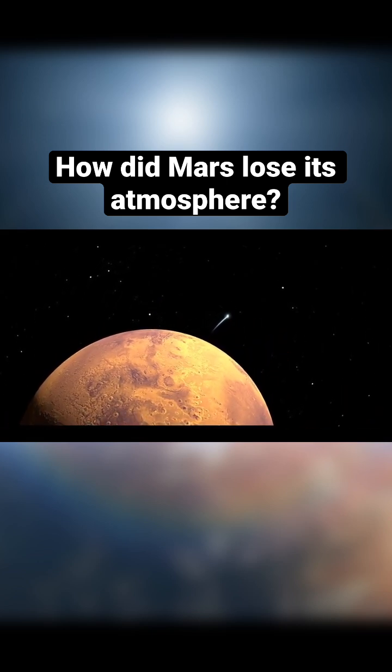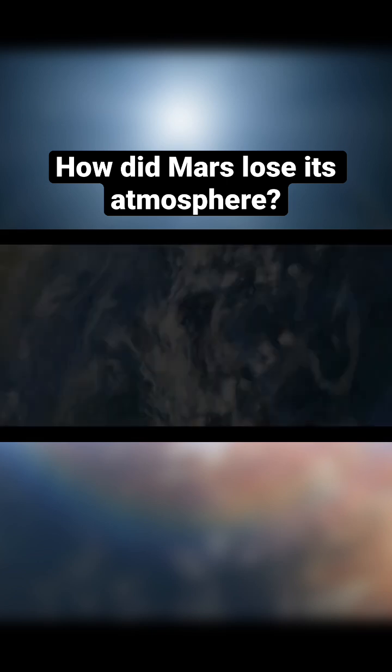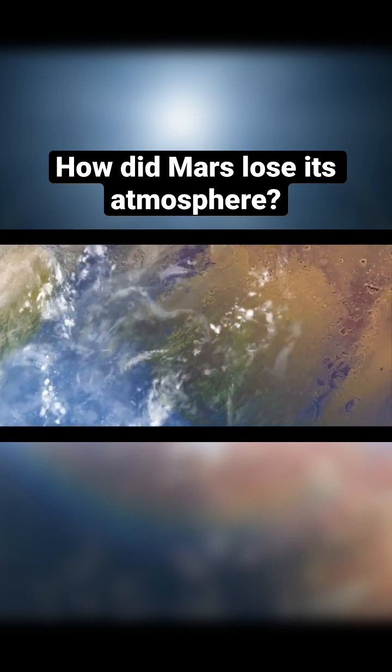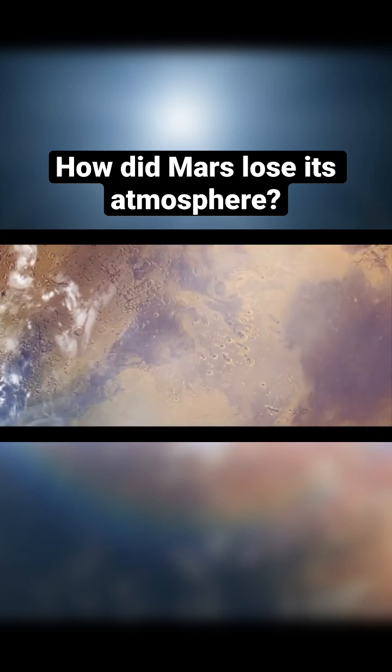Some of these atoms can be knocked, or sputtered, into space, causing atmospheric loss. And over billions of years, this could have caused quite a bit of change, especially since the solar wind may have been more intense early in our solar system's history.